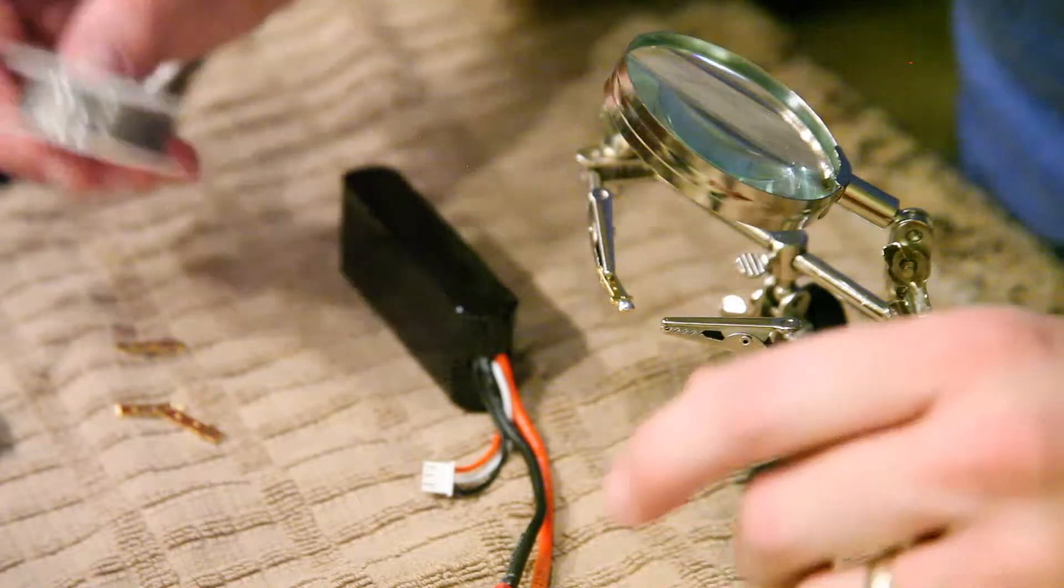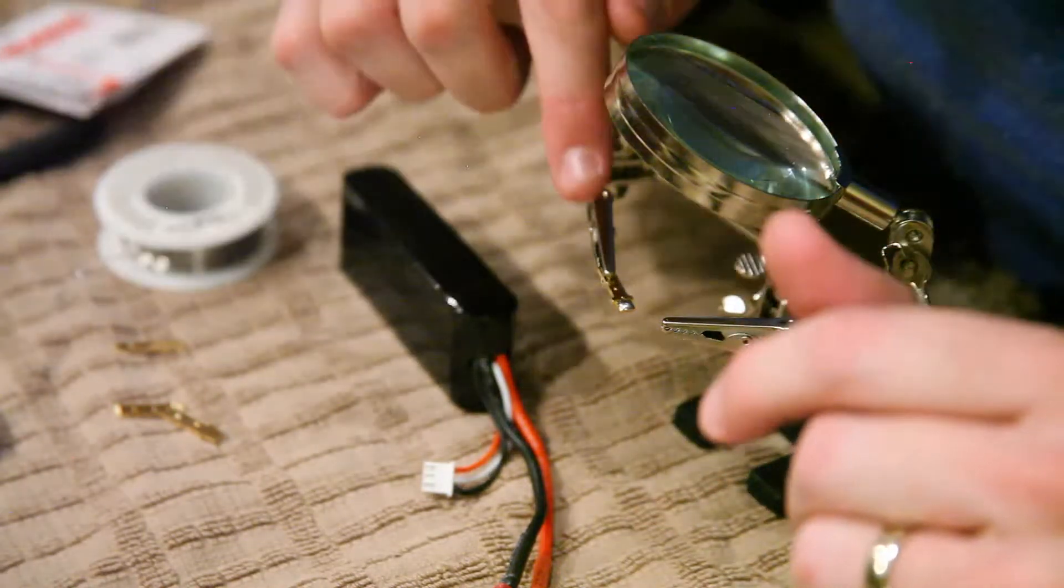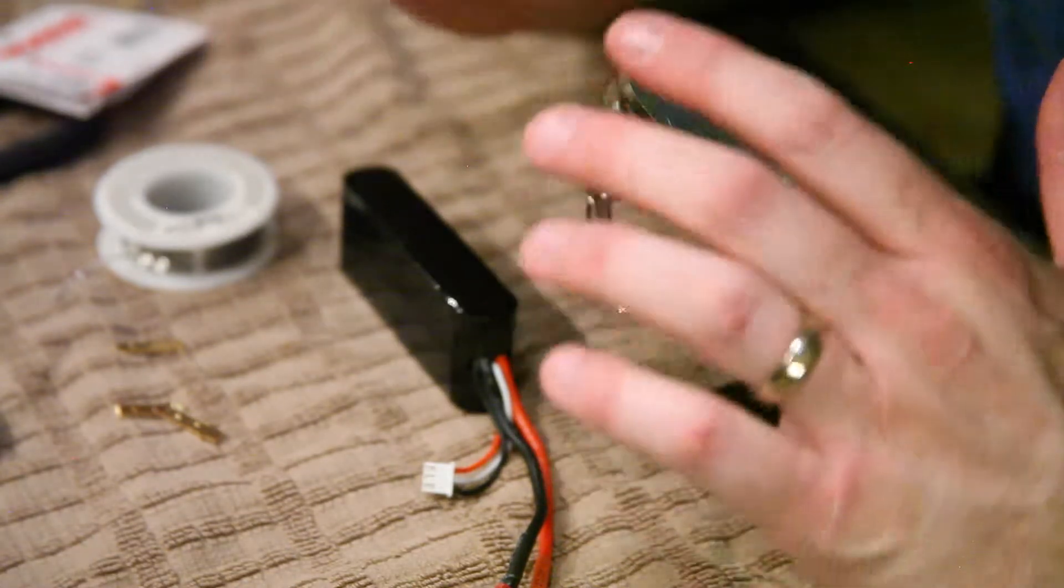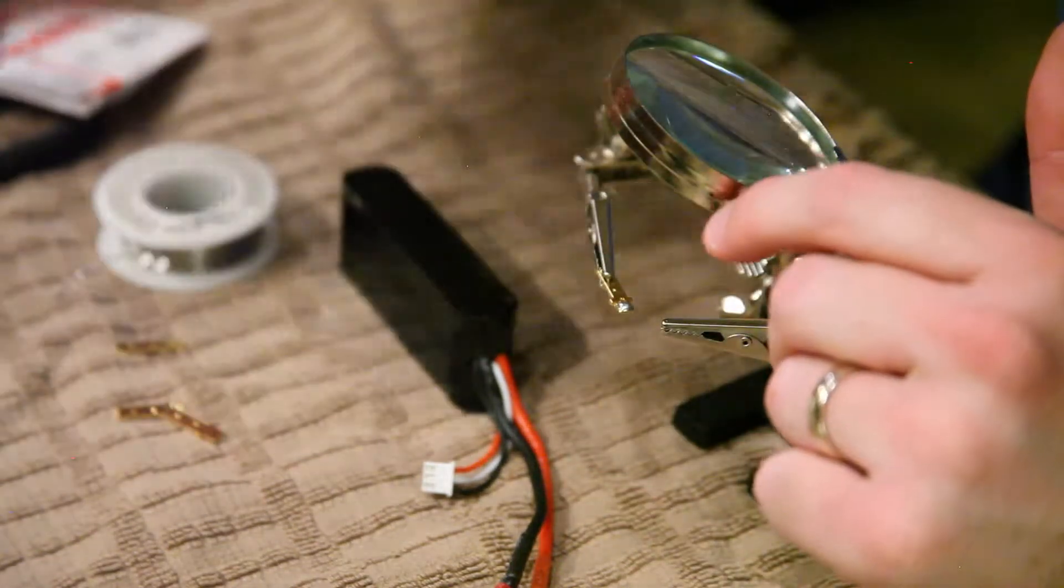As you probably know with Traxxas, if you read the instructions, you don't want to get any solder over the line. There's a little line on them. You don't want to get any solder over there because it just makes it really hard to get it in here.